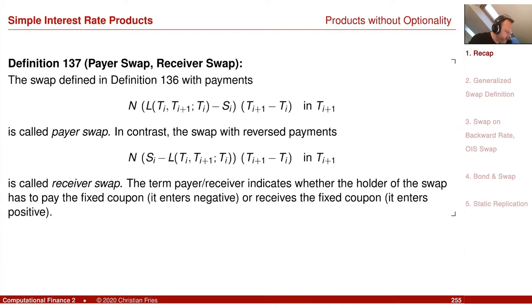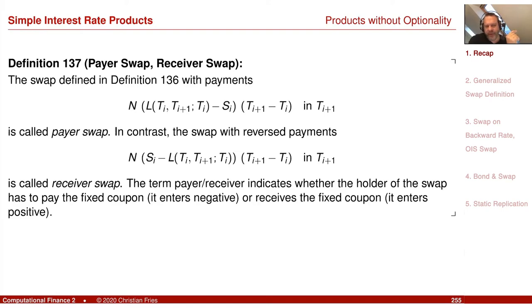Our swap can have different flavors — it could be L minus S or S minus L: pay the fixed amount and receive the floating, or receive the fixed amount and pay the floating. But our swap was still a heavy idealization compared to swaps in the actual market. In the market, the time discretization — the tenor discretization — used for the periods and payment dates can differ for the floating and the fixed leg. For example, you could pay the floating rate every three months but receive a fixed rate only every year. So the swap not only exchanges different types of rates, it also exchanges different frequencies.